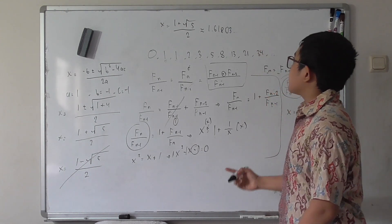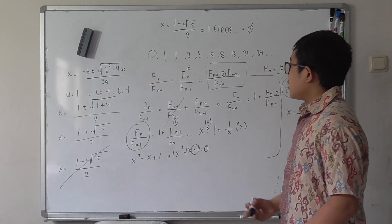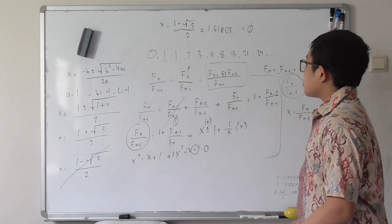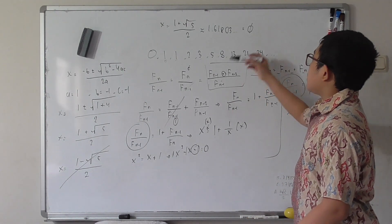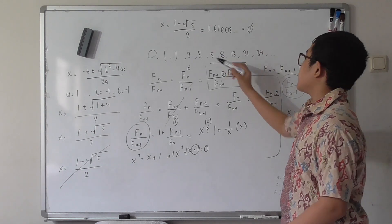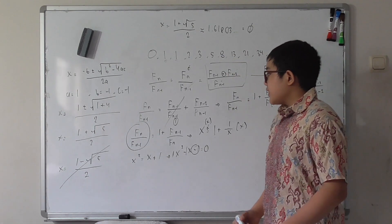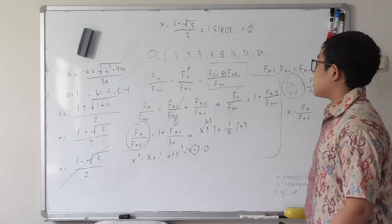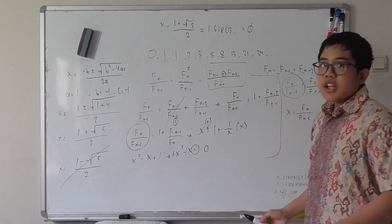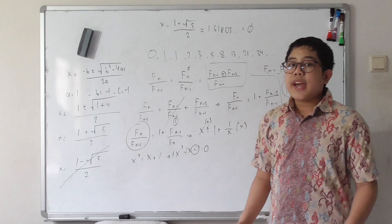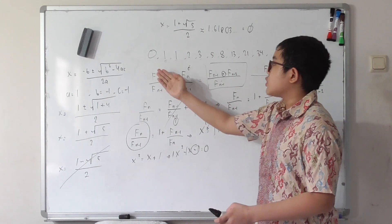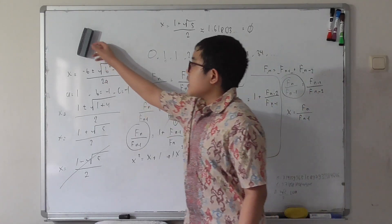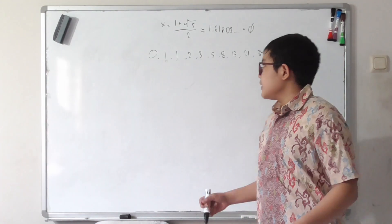So what we've proven is that the Fibonacci sequence indeed produces the golden ratio of approximately 1.618. This begs the question: is the Fibonacci sequence the only sequence with this property? Actually, any sequence where the next term is the sum of the previous two will obey this same rule and approximate the golden ratio.